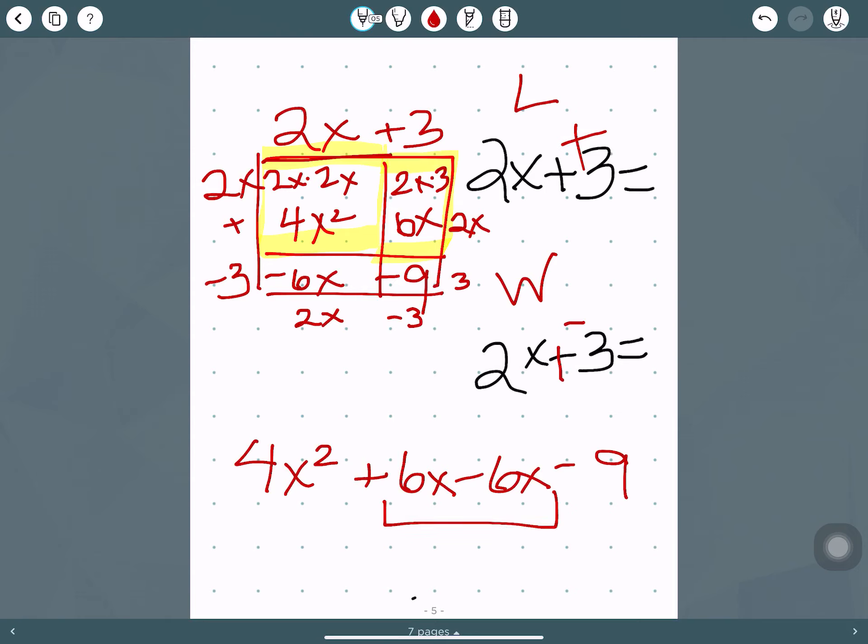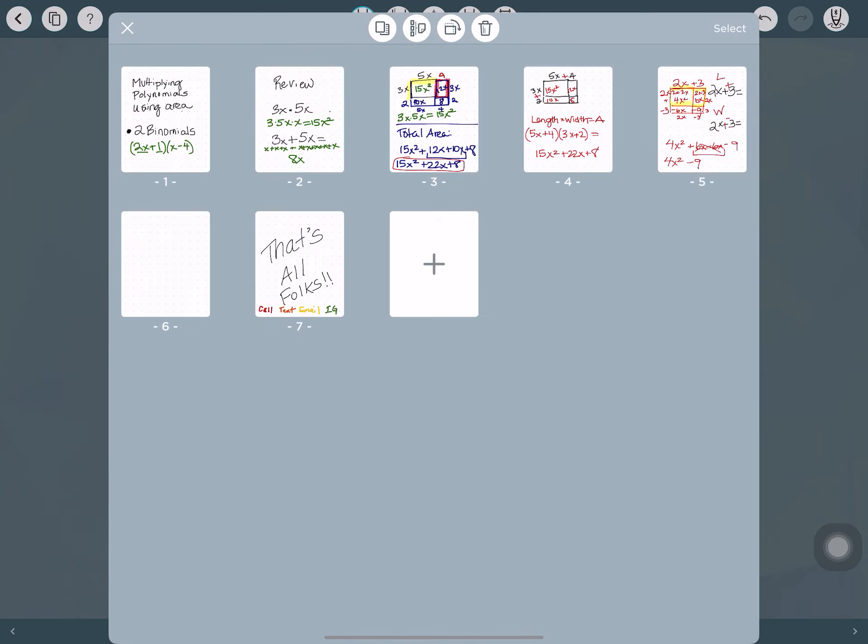We have 2 like terms there, 4x squared minus 9. This is what we call a difference of 2 squares. So I'm going to take a look at that just for a second.